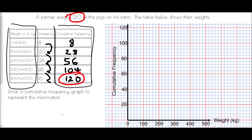So we always plot at the top end of the group. Our first point is (100, 8), then (200, 28), then (300, 56), (400, 104), and (500, 120). The next thing to be careful of is how we join those points together. Because this is grouped data, we don't actually know what is happening exactly between each of the points, so we have to use a smooth curve to join them all together.